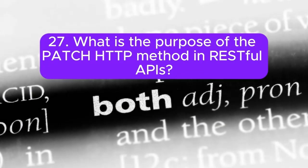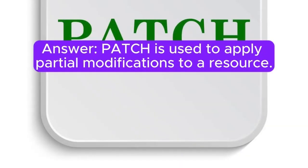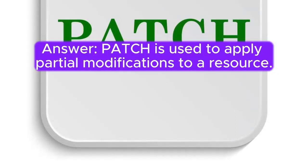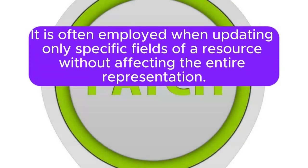Question 27: What is the purpose of the PATCH HTTP method in RESTful APIs? PATCH is used to apply partial modifications to a resource. It is often employed when updating only specific fields of a resource without affecting the entire representation.